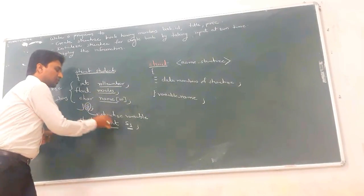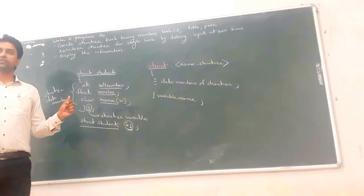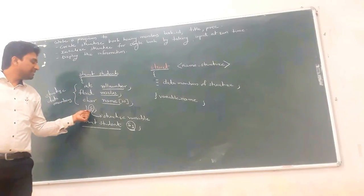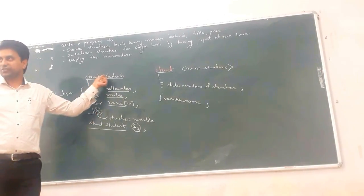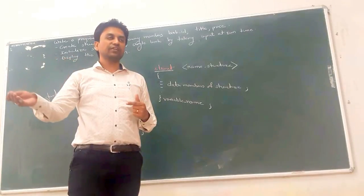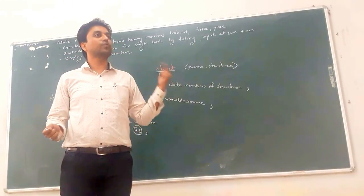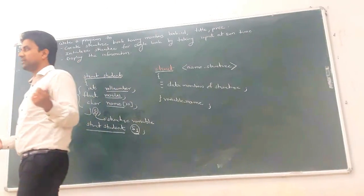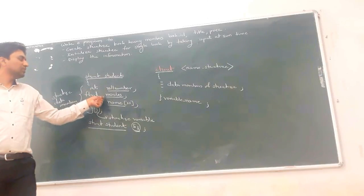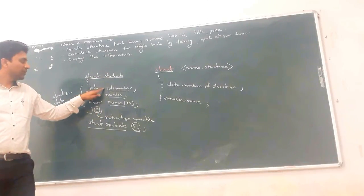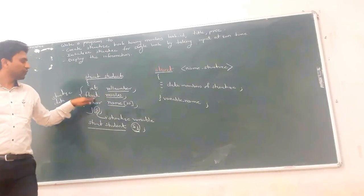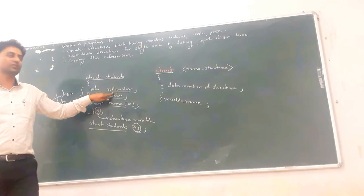For the structure variable — that is, S or S1 — memory gets reserved on the RAM. How many bytes are reserved? For an integer, 2 bytes are reserved; for a float variable, 4 bytes; and for a character variable, 1 byte. Similarly, how many bytes are reserved for a structure variable depends on its data members. Here we have three data members.